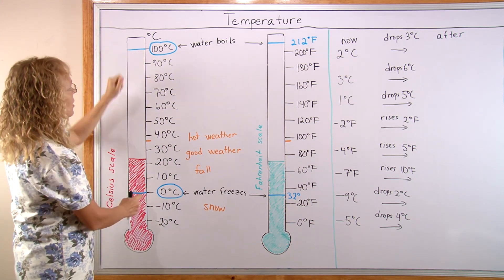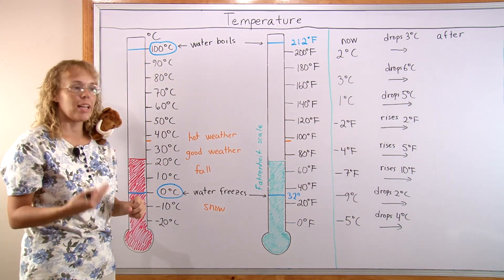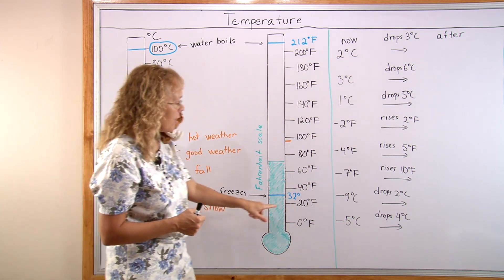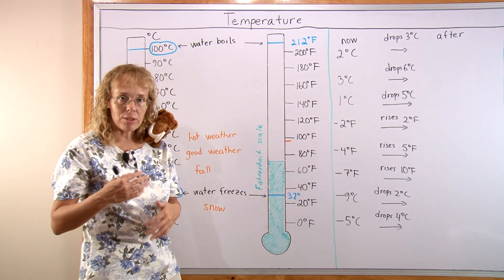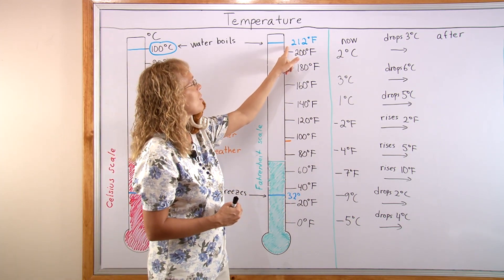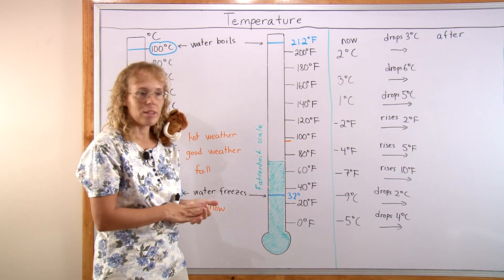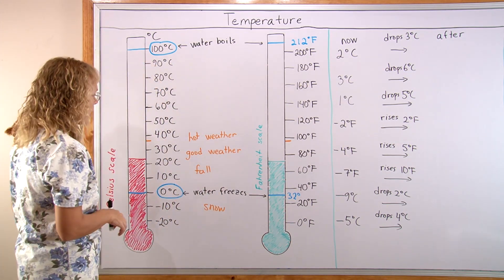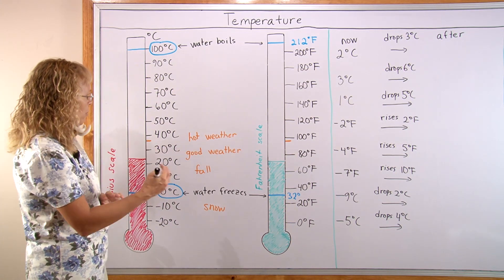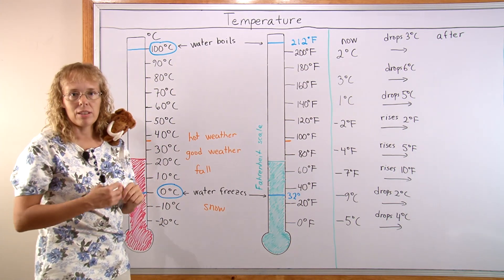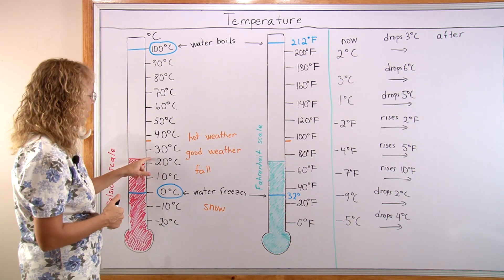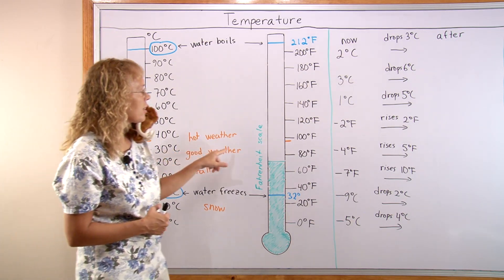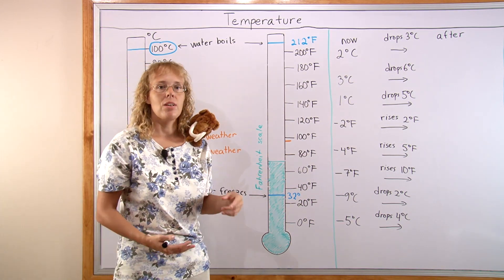These two points define the Celsius scale. The corresponding points in the Fahrenheit scale are 32 degrees when water freezes and 212 degrees Fahrenheit when water boils. Let's look at some examples. Most people think that nice weather, comfortable temperature, is about 20 something in the Celsius scale. In the Fahrenheit scale it ends up being 70 something.